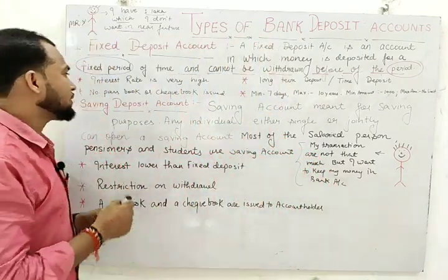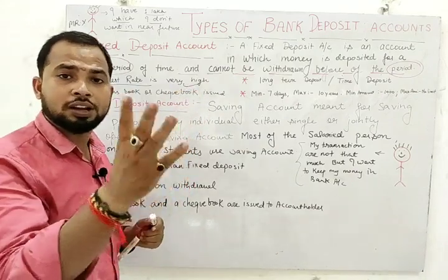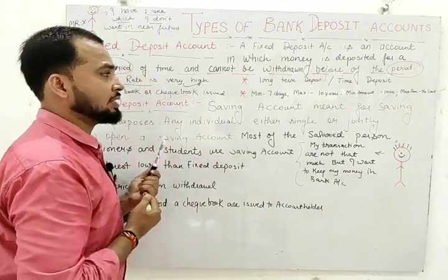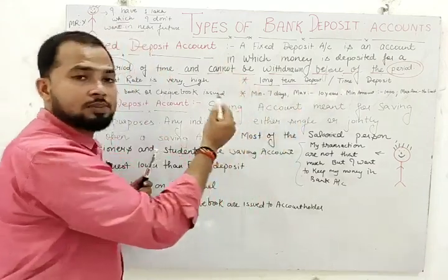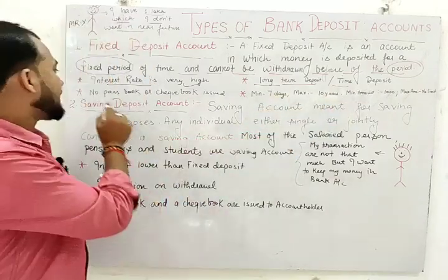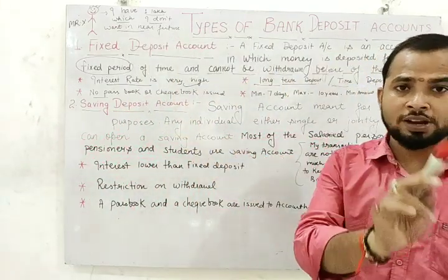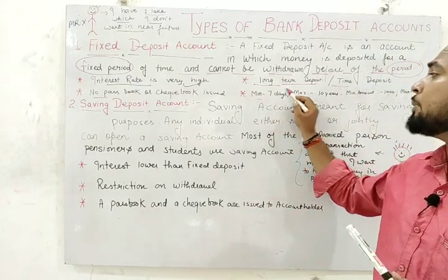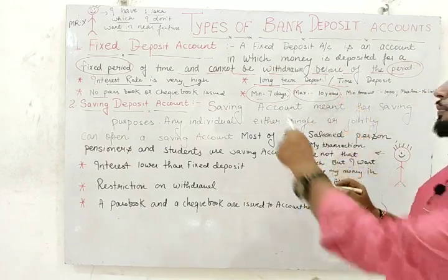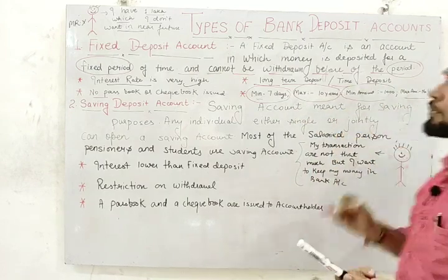What are the features of a fixed deposit account? The interest rate is very high — the highest among all four accounts. The other name of fixed deposit is long-term deposit as well as time deposit. No passbook or checkbook is issued; instead, the bank provides one bond. Minimum period is 7 days and maximum is 10 years. Minimum amount is ₹1,000 and maximum has no limit.